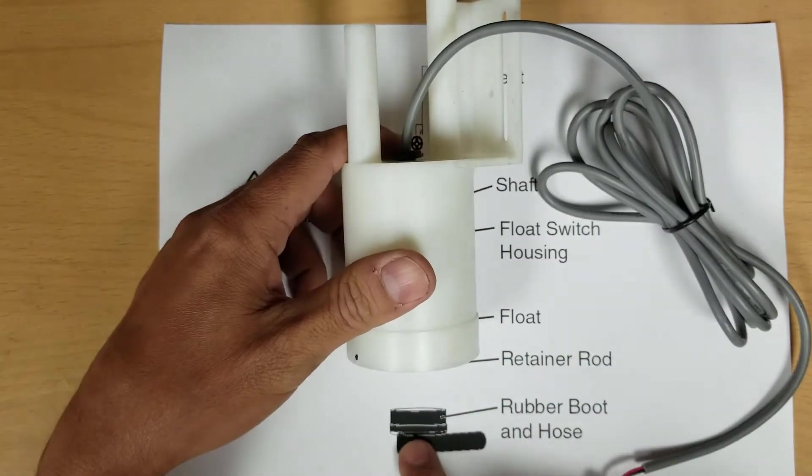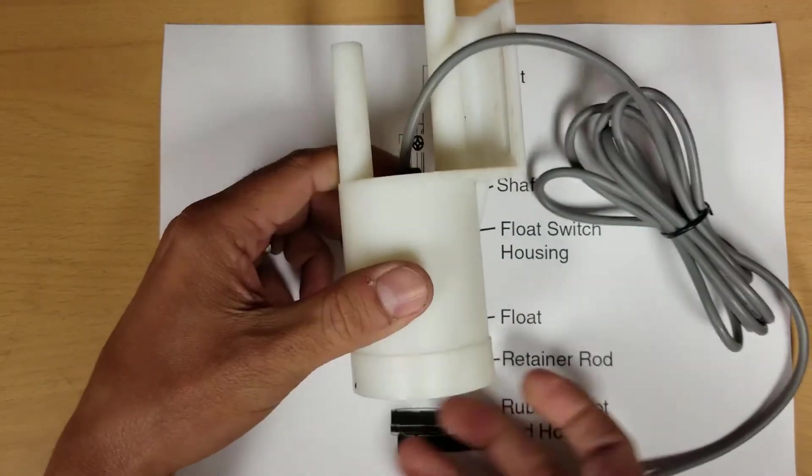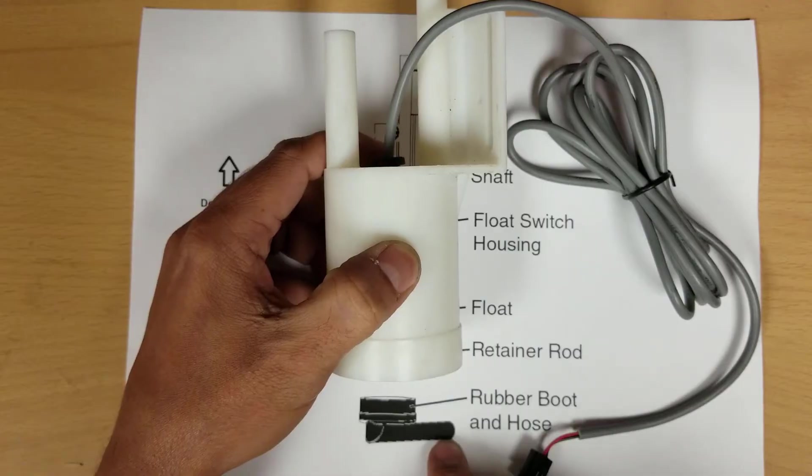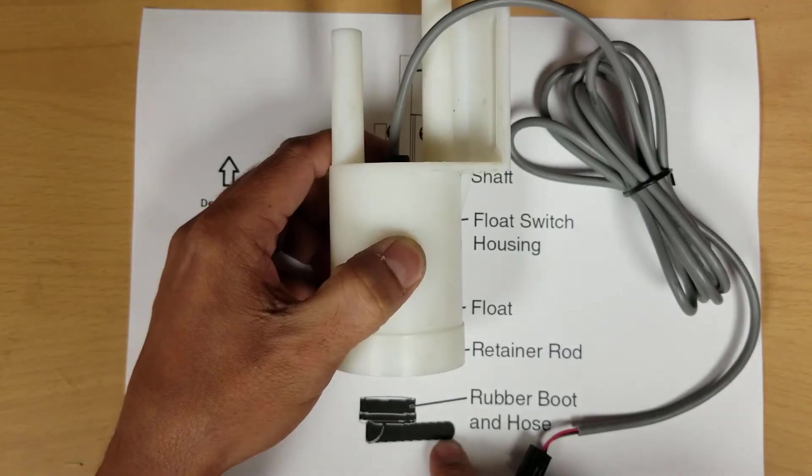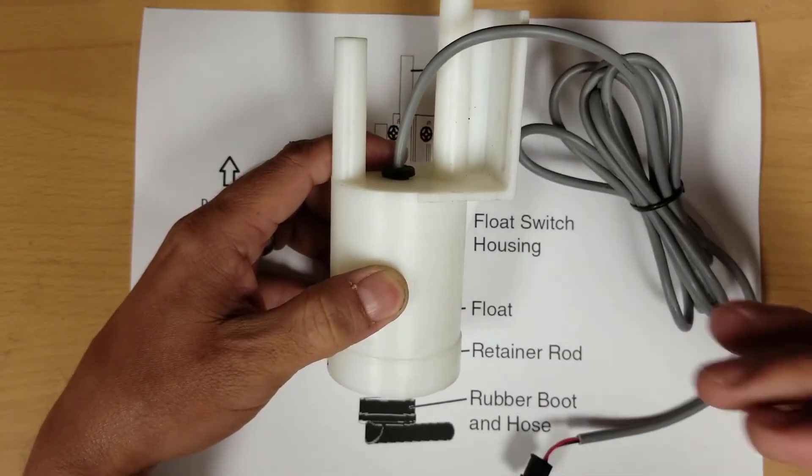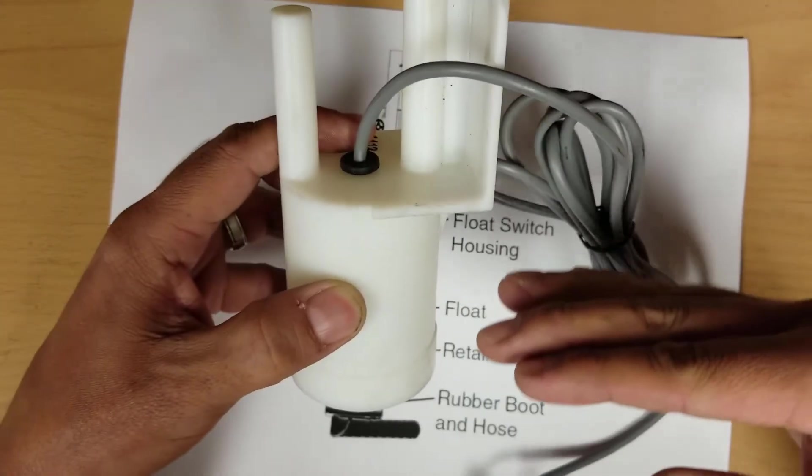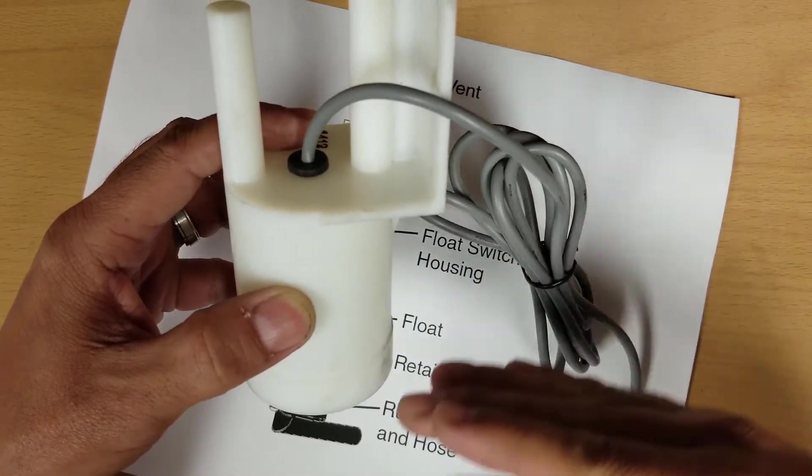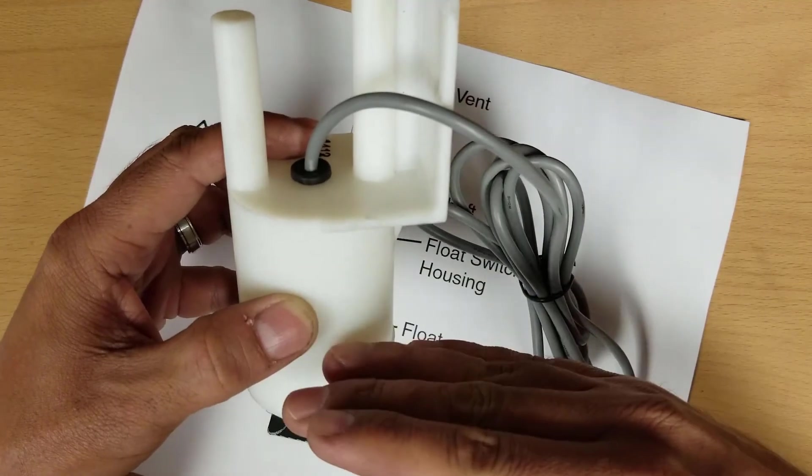There is a boot. This boot here couplings over this and this rubber hose attaches to your reservoir. Now the water level in the reservoir will be the same in your float. So as the water level in your reservoir drops, so does the water level in your float.